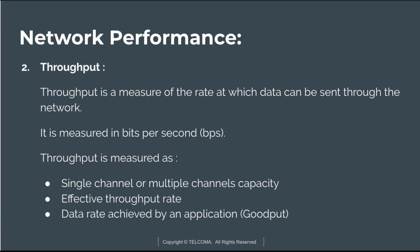Throughput is also known as capacity and is a measure of the rate at which data can be sent through the network. It is measured in bits per second. Throughput is measured at the single channel or multiple channel capacity, as well as the effective throughput rate or data rate achieved by an application, which is also known as goodput.